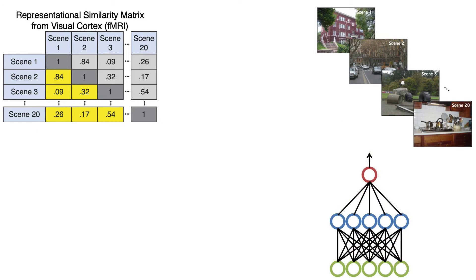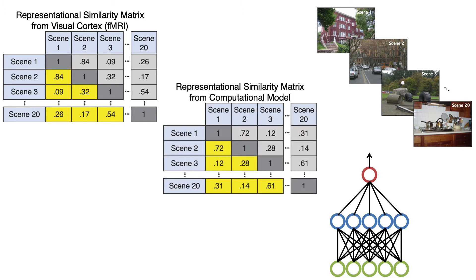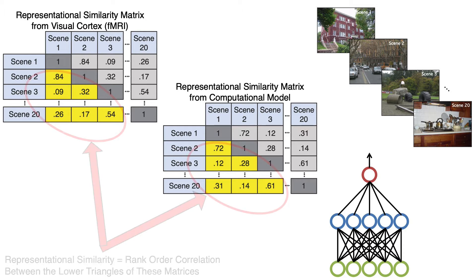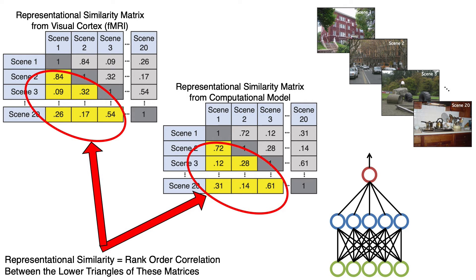We could also get a Representational Similarity Matrix for a neural network model trained on scene recognition. We could feed each of the 20 scenes into the network, note the pattern of activation across the units for each scene, and then examine the correlation between the activation pattern for each pair of scenes, giving us a 20 by 20 RSM for the neural network. We could then ask whether the RSM for the model is similar to the RSM for the fMRI data by looking at the correlation between the lower triangles of the two matrices. We use a rank-order correlation because we don't want to assume anything about the scaling of these two matrices. If they are correlated, this indicates that the representational geometry of the model is predictive of the representational geometry of the fMRI data.